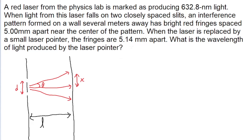In the problem statement, we're told that two different lights having different wavelengths are passing through these slits and creating interference patterns showing fringes at different positions. We're looking to find the wavelength of one of these lights, and we're given the wavelength of the other. Because we're given information about the distance between the bright fringes, we're concerned with constructive interference.